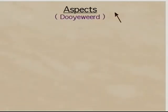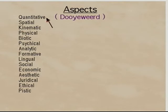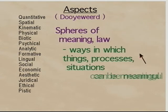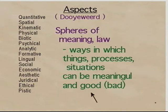What are aspects? Aspects are Dooyeweerd's idea of the diversity and coherence of aspects of reality — social reality, societal reality, individual reality, physical reality — you name it, it's all there. Aspects are spheres of meaning: ways in which things can be meaningful, or processes or situations. And because they are meaningful, they are also good and imply law, and each aspect has a different set of laws.